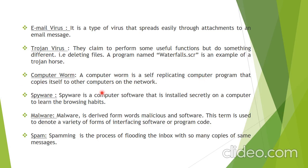Computer worm is a self-replicating computer program that copies itself to other computers on the network. It spreads from one computer to another and creates duplicate copies of your program. Next is spyware — it is a computer software that is installed secretly on a computer to learn your browsing habits. Whatever you search using Mozilla or Google Chrome, it secretly monitors it. For example, if you open a bank website and enter your ID and password, spyware can hack your personal details.